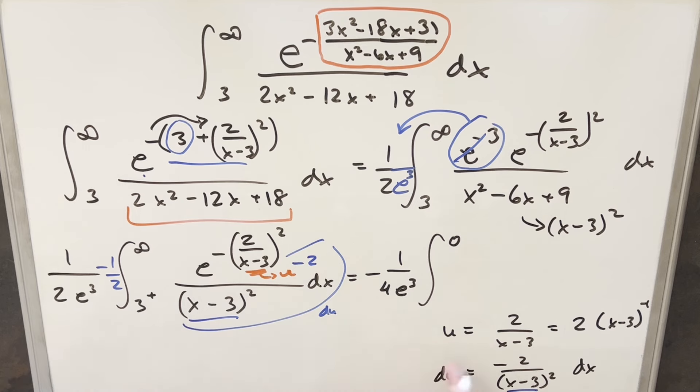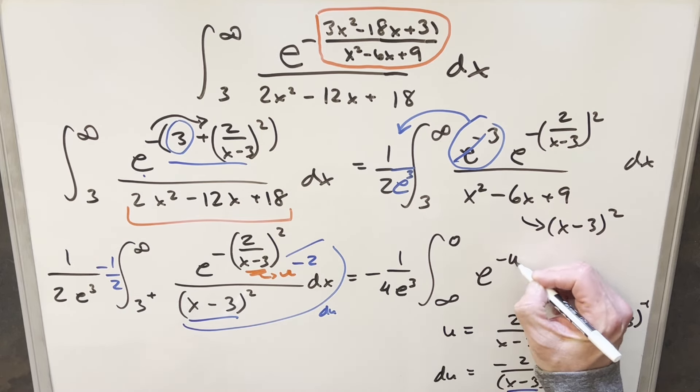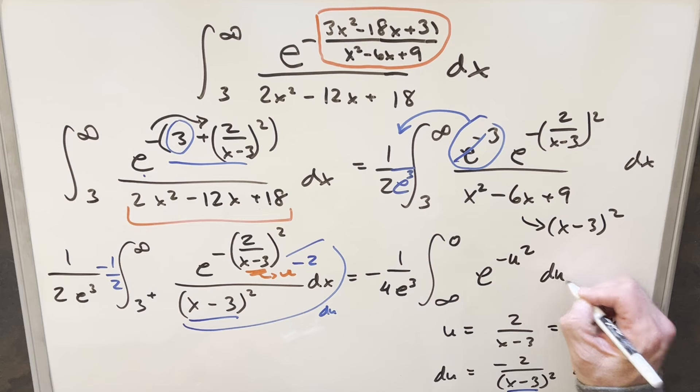When you plug that in here, you're going to have a small positive number in the denominator. So this is going to be going off to positive infinity. And then here again, this is just going to become E minus U squared and everything else is DU.